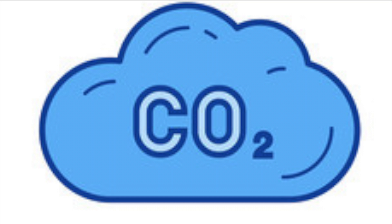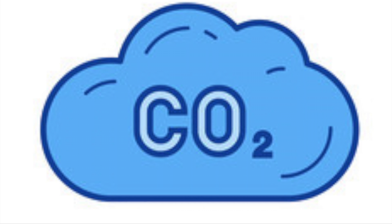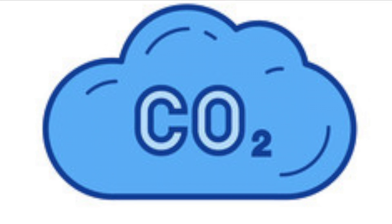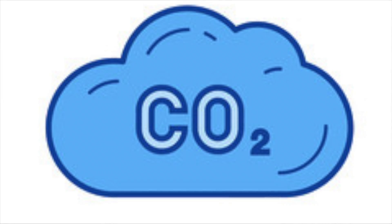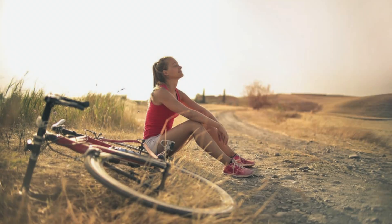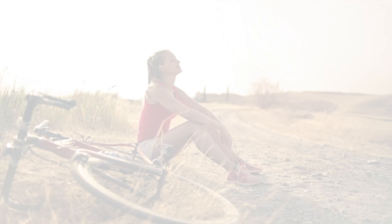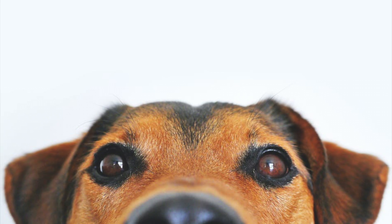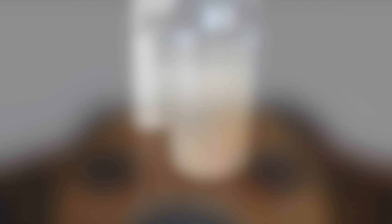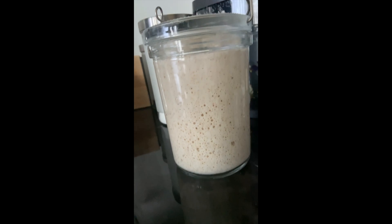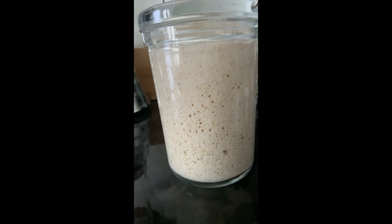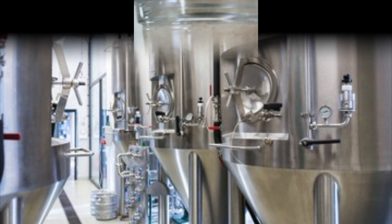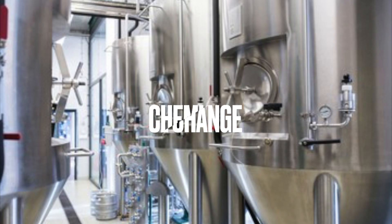Carbon dioxide is a gas at room temperature. It is made of one carbon and two oxygen atoms. People and animals release carbon dioxide when they breathe out. The carbon dioxide bubbles in the dough will rise, and this process is called fermentation — a chemical change.